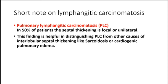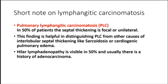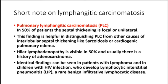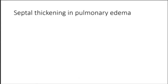Identical findings can be seen in patients with lymphoma and in children with HIV infection who develop lymphocytic interstitial pneumonitis (LIP), a rare benign infiltrative lymphocytic disease. In pulmonary edema, there is a combination of smooth septal thickening and ground glass opacity with gravitational distribution, along with thickening of the peribronchovascular interstitium (peribronchial cuffing) and fissural thickening.